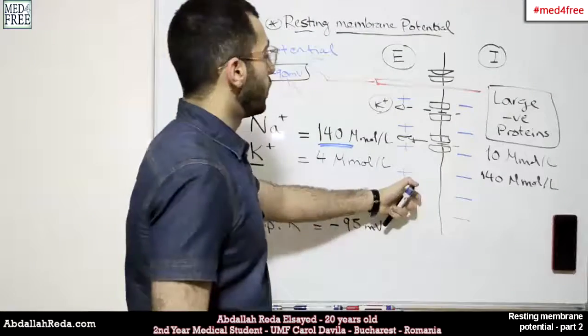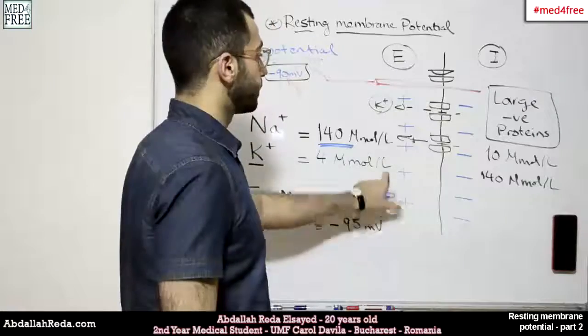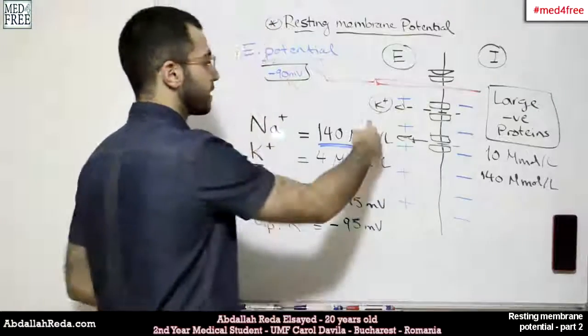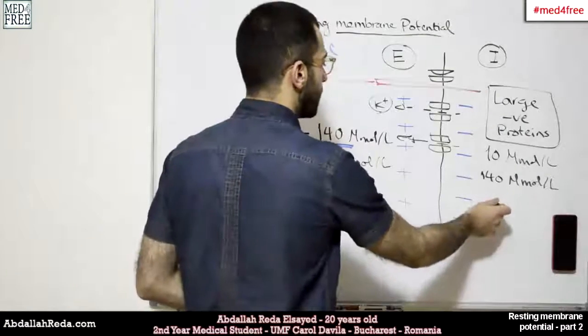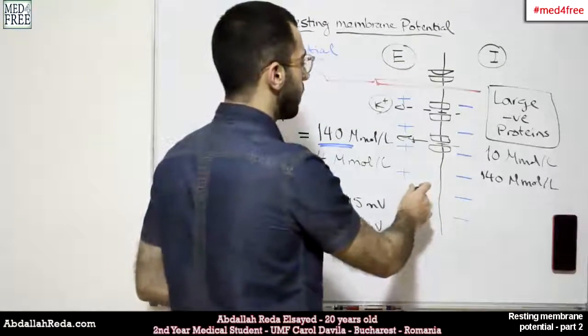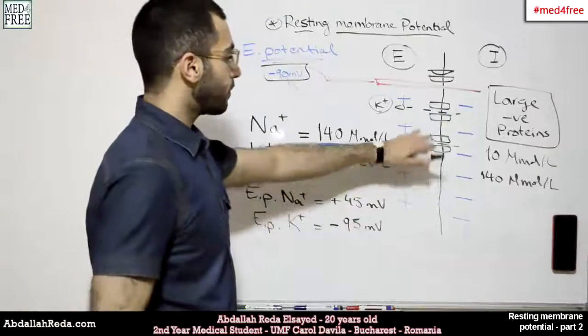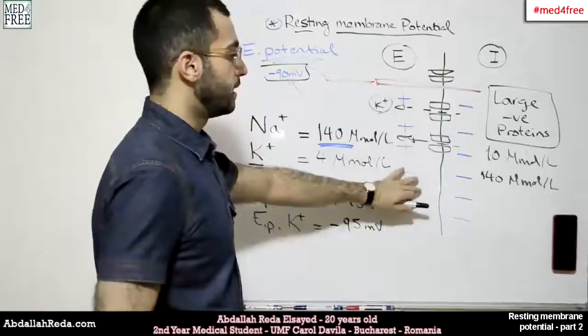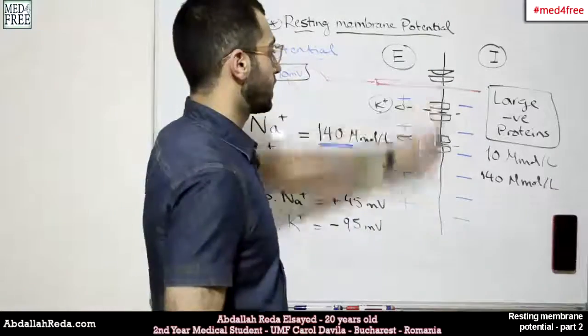Last time, we said that the charge on the extracellular side is relative - technically, it's the ground, it's zero. So if the inside becomes positive, the outside will be negative. We call this a depolarization, where the membrane becomes active.